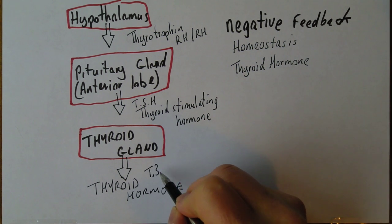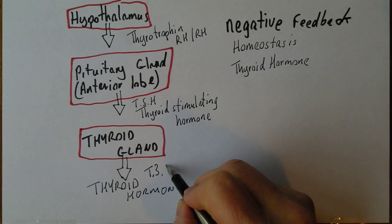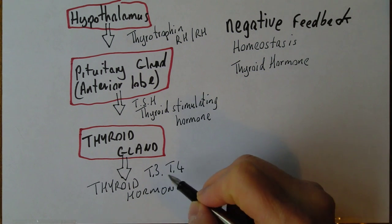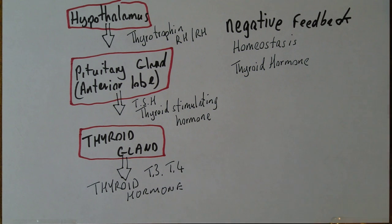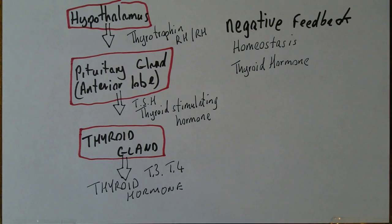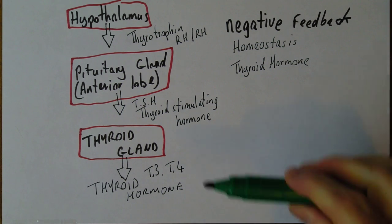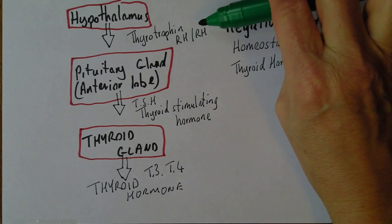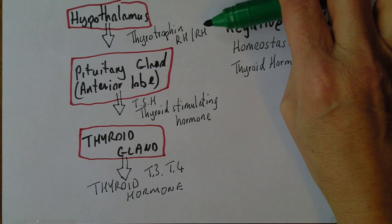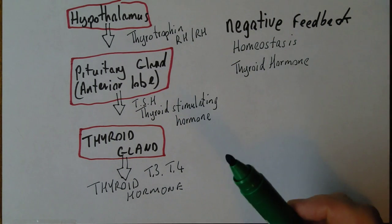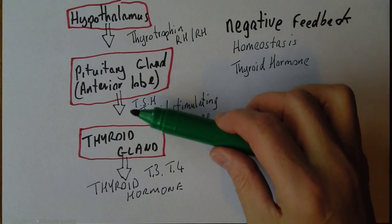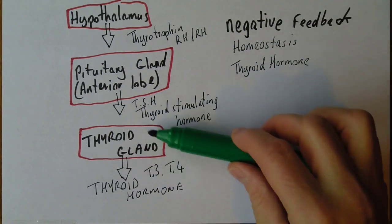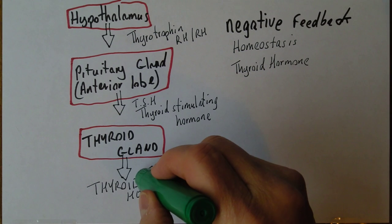That thyroid hormone comes in the form of T3 — triiodothyronine — and T4. The difference is the amount of iodine: T3 has three atoms of iodine, T4 has four. So we've gone from the hypothalamus releasing thyrotrophin releasing hormone down to the pituitary gland, which releases thyroid stimulating hormone that travels in the blood to the thyroid gland to increase thyroid hormone production.